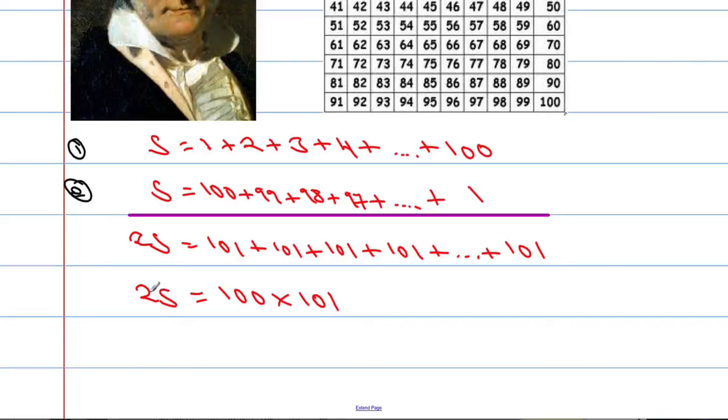Now we didn't want double the sum. We wanted just the sum. So that's equal to 100 times 101 divided by 2. If you were to work that out, you get 5050. And that is the sum of the first 100 numbers.